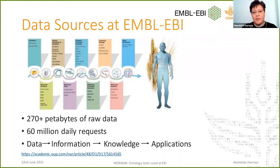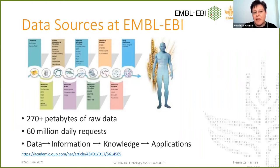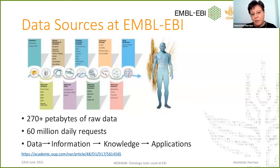The data that we have at EBI is quite large, varied, and vast. We have 270 petabytes of raw data at our last check. A petabyte is 1,024 terabytes, which means that a petabyte is over 1 million gigabytes — so that's quite a bit of data. What we also find is that this data is growing quite substantially, and the rate at which the data is growing is also increasing. There's a paper linked at the bottom of this slide written by EBI last year that explains this increase in growth.